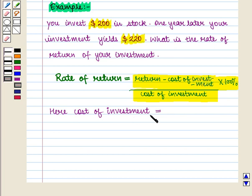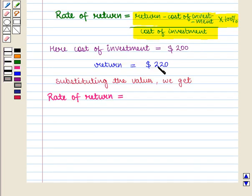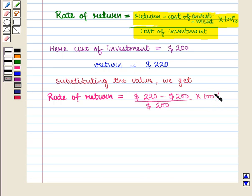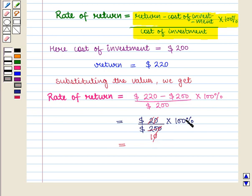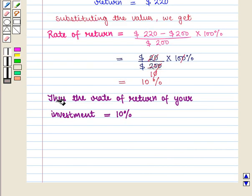Here the cost of investment is given as $200 and the return is given as $220. Substituting these values in the formula, we get rate of return = (220 − 200) ÷ 200 × 100%, which equals 20 ÷ 200 × 100%, and this is equal to 10%. Thus the rate of return of your investment is 10%.